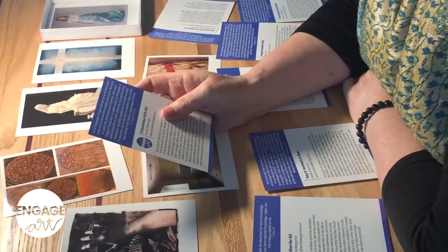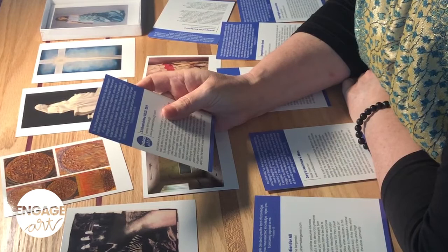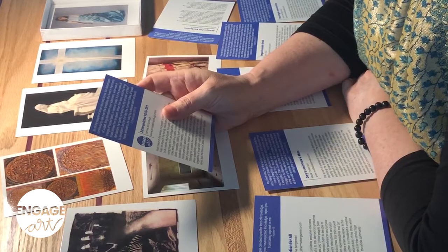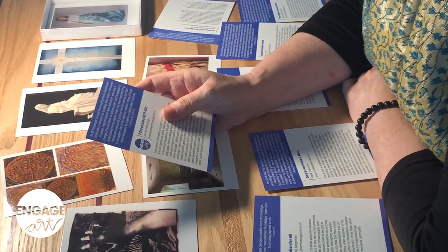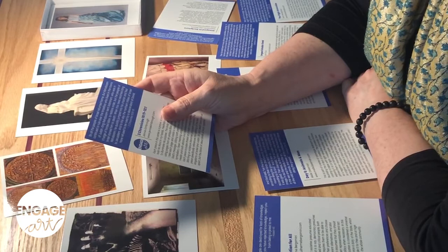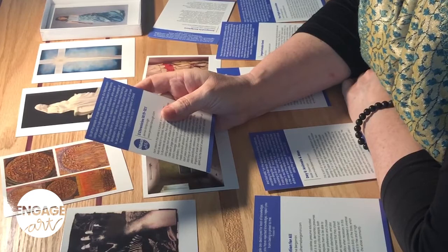The scripture is 2nd Chronicles 10:16-19. It says: 'So all the people of Israel returned home, but Rehoboam continued to rule over the Israelites who lived in the towns of Judah. King Rehoboam sent Adoniram, who was in charge of forced labor, to restore order, but the people of Israel stoned him to death. When this news reached the king, he quickly jumped into his chariot and fled to Jerusalem.'